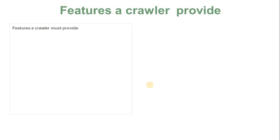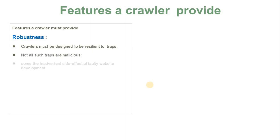Now let's see the features a crawler should provide. The first one is robustness. A crawler must be designed to be resilient to traps. Not all such traps are malicious; some are an inadvertent side effect of faulty website development. When you click on a link, it may be malicious or a trap. The web crawler should be able to identify such links so that traps do not affect the results.